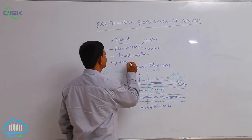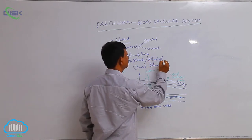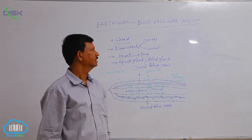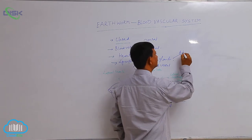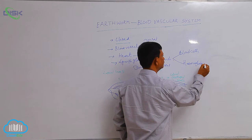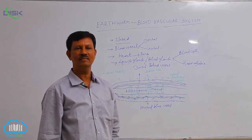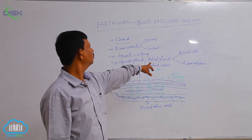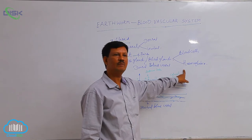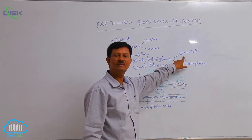Lymph glands, also known as blood glands, are present and situated in the fourth, fifth, and sixth segments. These secrete blood cells and hemoglobin. Hemoglobin is found in the plasma, hence the blood of earthworm is red in color. In humans, hemoglobin is not present in the plasma but is found in the RBC, known as red blood corpuscles. Red blood corpuscles are absent in earthworm; due to the absence of hemoglobin, the blood cells are white in color and are known as white blood corpuscles.